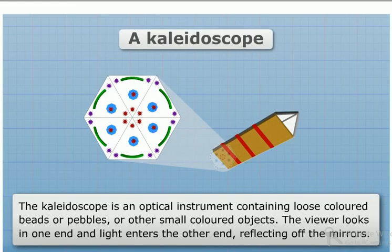A kaleidoscope. The kaleidoscope is an optical instrument containing loose colored beads, pebbles, or other small colored objects. The viewer looks into one end and light enters the other end, reflecting off the mirrors.